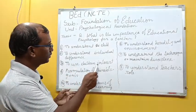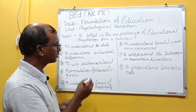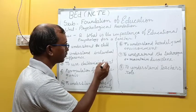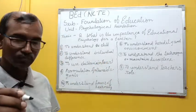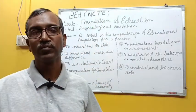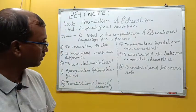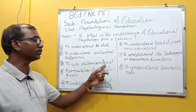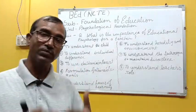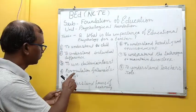Number three: to use children's interest. We must learn about children's interests, as all children are not interested in the same topic or subject — whether in academic areas or co-curricular activities. So we must understand children's interests and utilize them. How to understand children's interests can be known from the study of Educational Psychology.